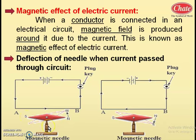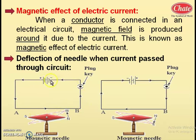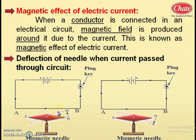When a magnetic needle is brought nearer to such an electric circuit — where a conductor is connected to a battery by a key — as soon as the current flows through this circuit, the magnetic needle deflects.